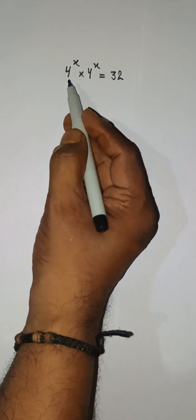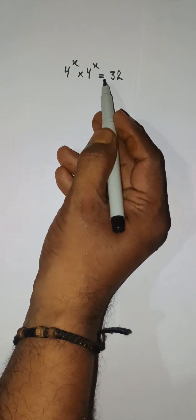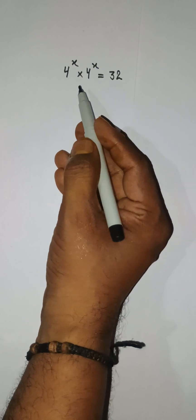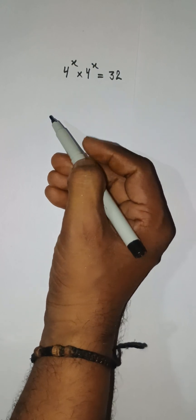Hello everyone, we have this problem: 4 to the power x times 4 to the power x equals 32. We need to get the value for x. Let's solve within 10 seconds.